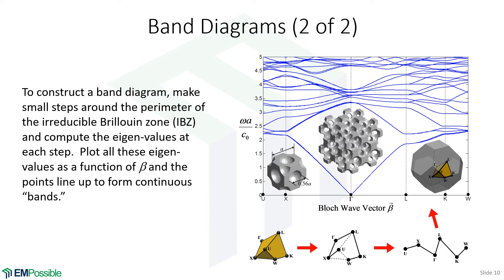The first time I looked at a band diagram I was completely confused by all the symbols on the horizontal axis. To understand it, you need to learn what a Brillouin zone is. Here's a face-centered cubic photonic crystal and its Brillouin zone. The irreducible Brillouin zone is the smallest piece that characterizes the entire zone by exploiting the lattice's extra symmetry. The vertices of that region are called the key points of symmetry.